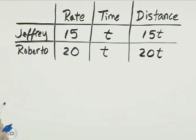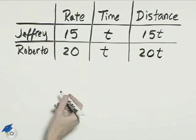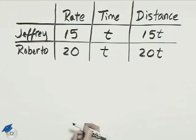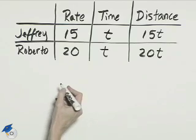We're looking for the combination of these distances, how far apart these two men will be. 15t is the distance for Jeffrey, 20t is the distance for Roberto, and the total distance is 147 miles.